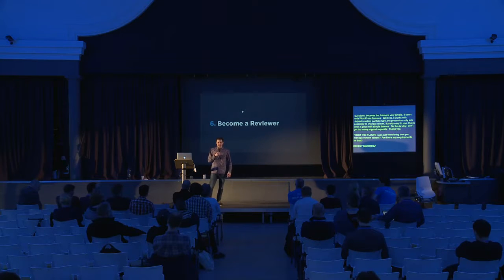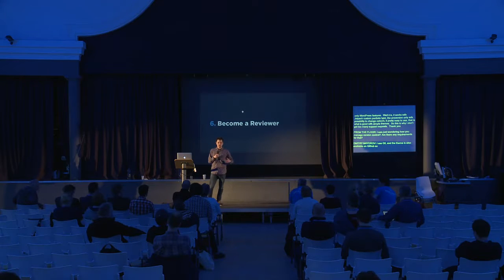Question: How do you manage version control — are there any requirements for that? I use Git, and the theme is also available on GitHub, so you can see all the things going on behind the development there. I try to make good commit messages. I also have a pro version in a separate branch on my computer that I sync with Bitbucket.